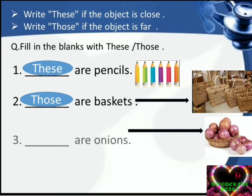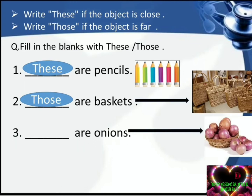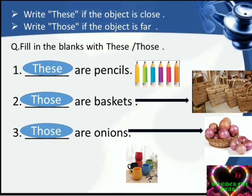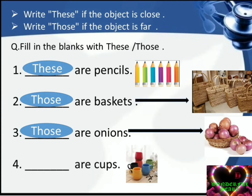Number three: dash are onions. Answer is: Those are onions. Number four: dash are cups. Answer is: These are cups.